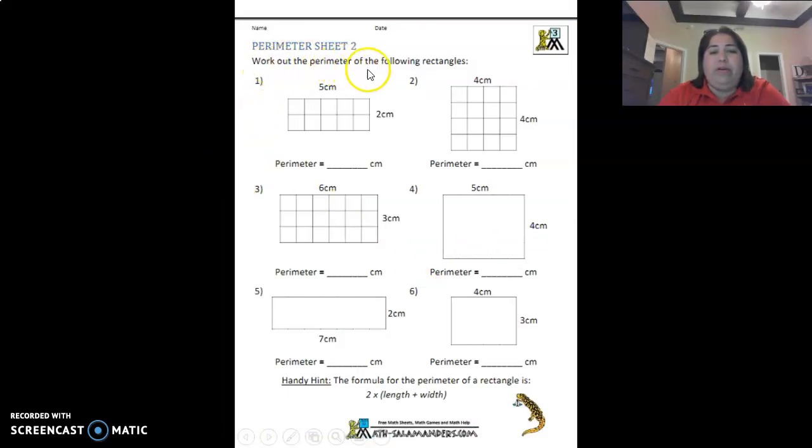Work out the perimeter of the following rectangle. Remember the perimeter, what's around it. So you're going to add all sides. Remember all these are perimeters. So that's all you're going to do is add all sides.